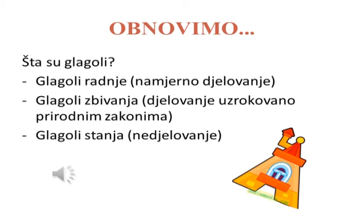Glagoli stanja – nedjelovanje su glagoli stanja koji kazuju proces kada se ništa ne radi niti se zbiva, već je taj proces stanja u kojem se neko ili nešto nalazi. Na primjer: crnjeti se, boraviti, postojati, čučati, klečati, spavati, drijemati, boljeti.